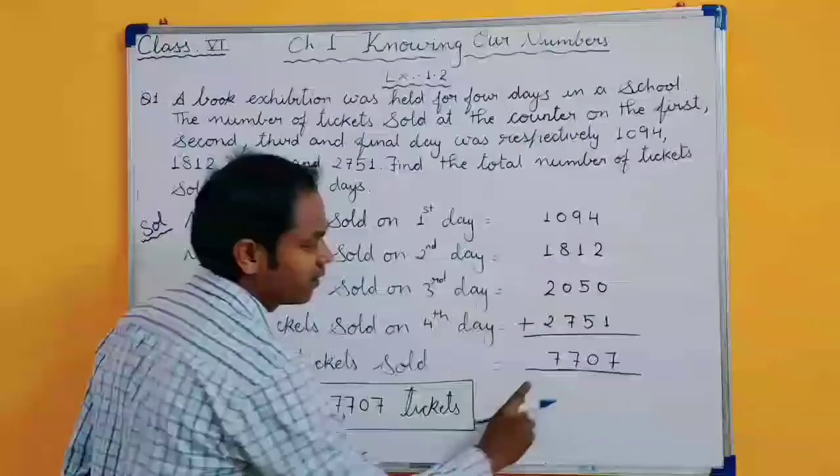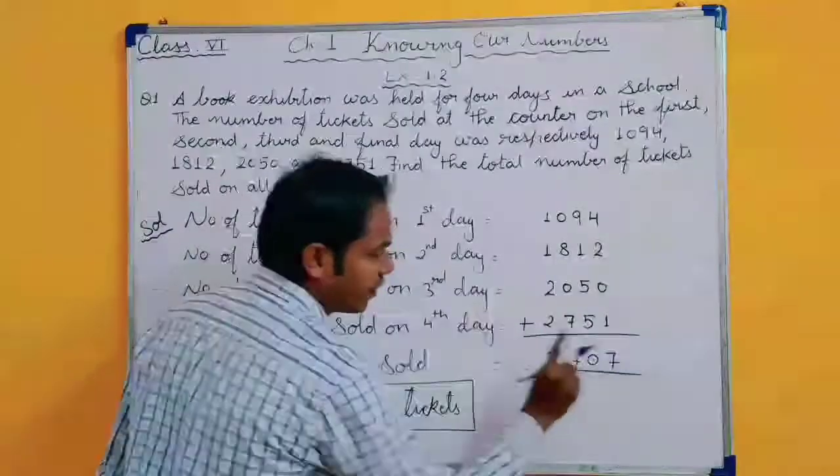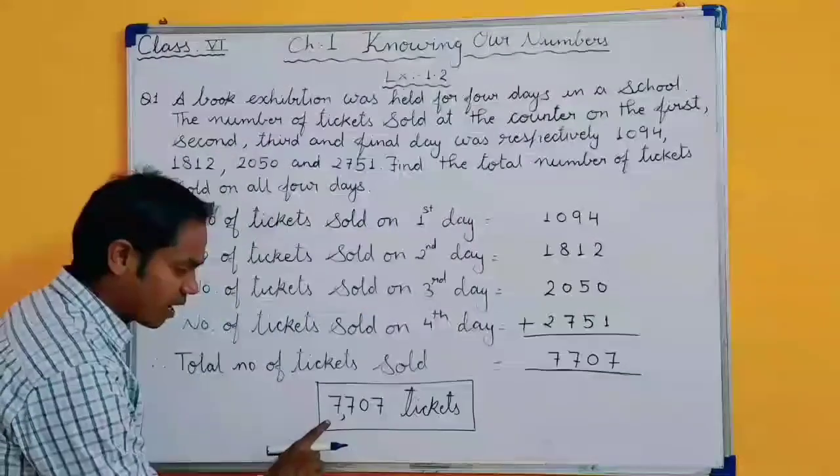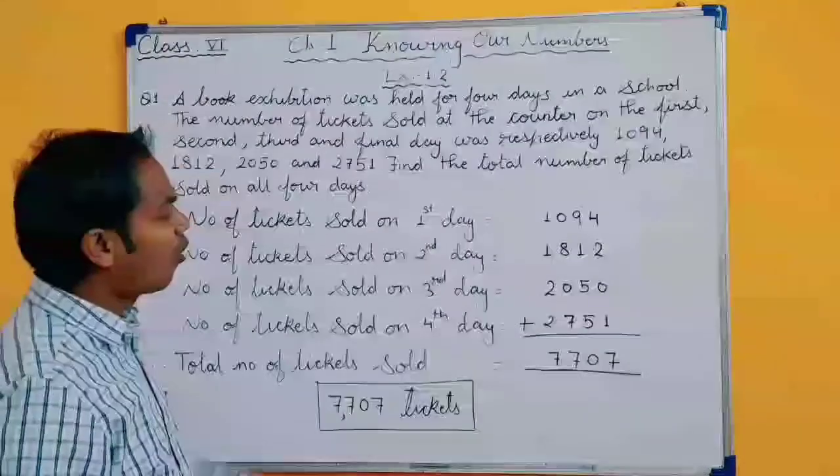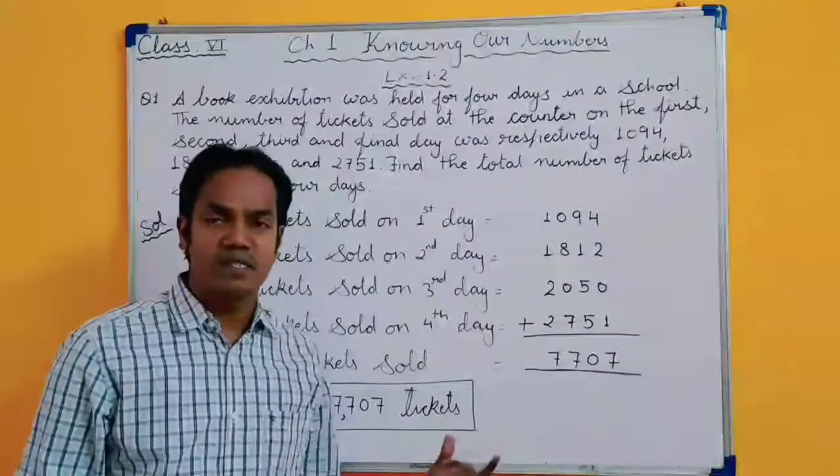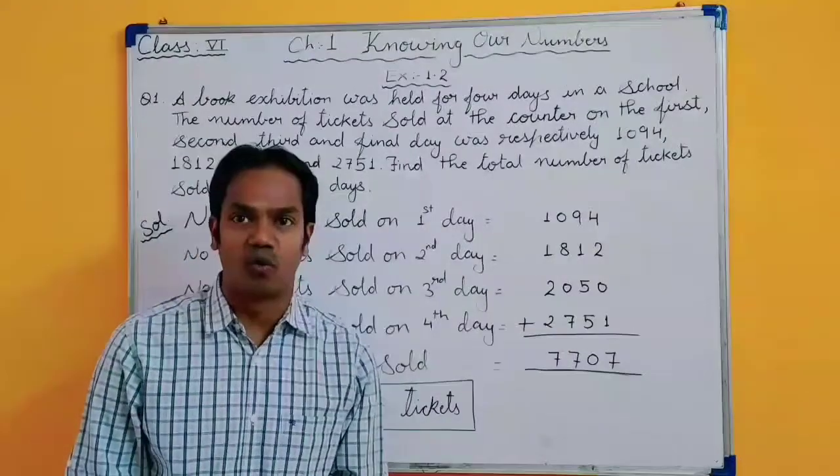So after adding, what are you getting? 7707. So this is your answer. 7707 tickets sold on all the 4 days. This is the total number of tickets sold.